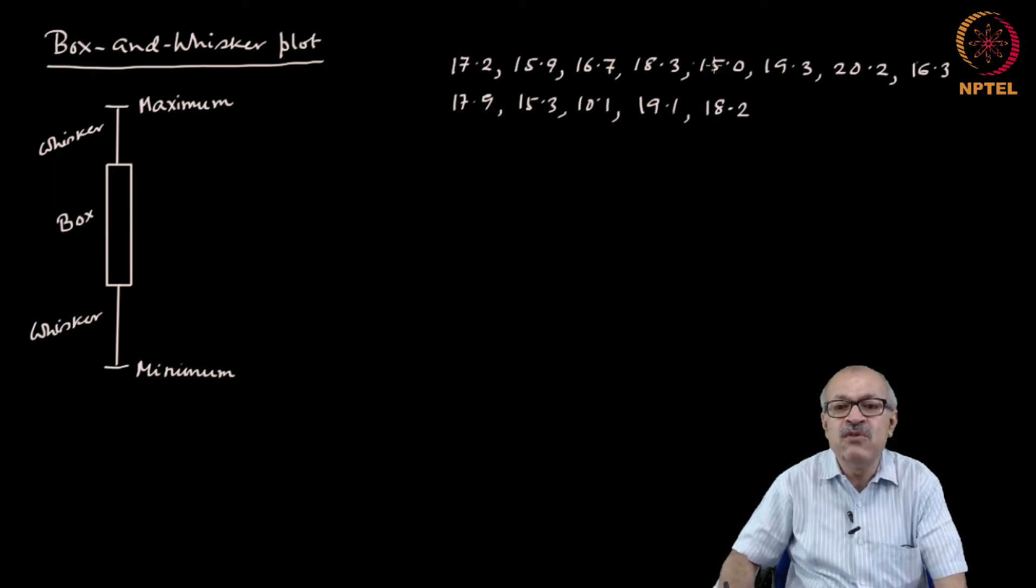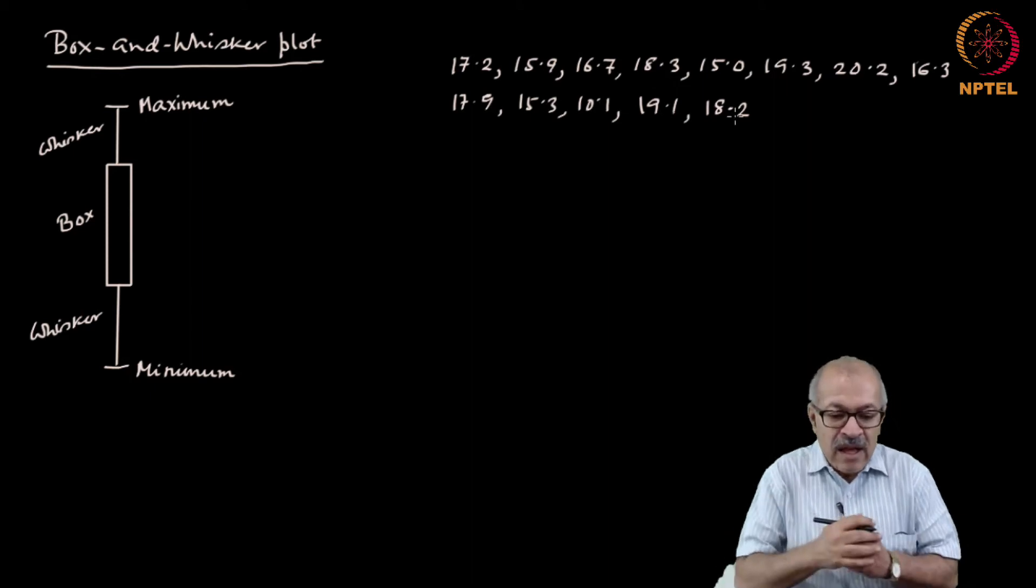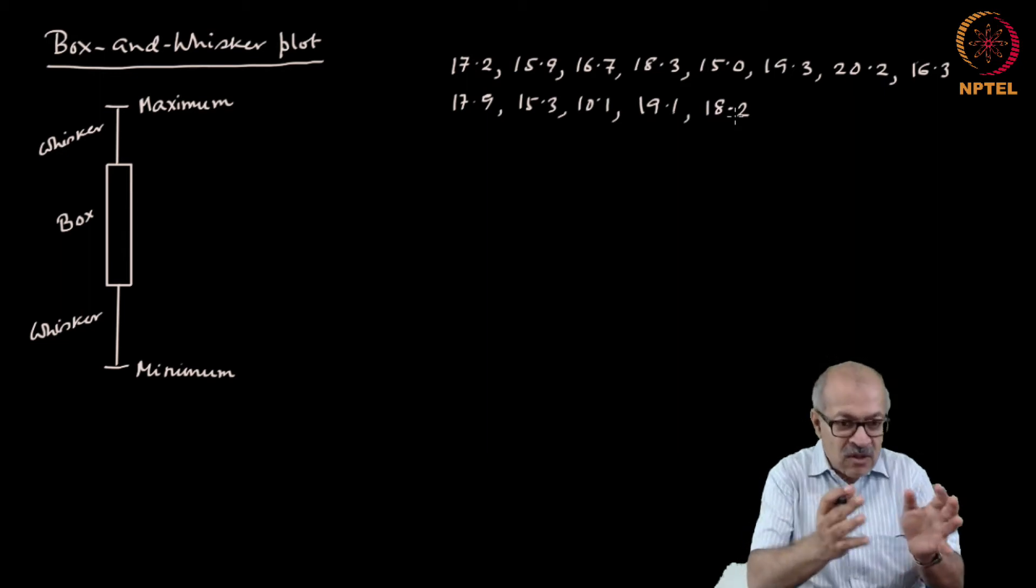How many data points are there? 1, 2, 3, 4, 5, 6, 7, 8, 9, 10, 11, 12, 13 data points.